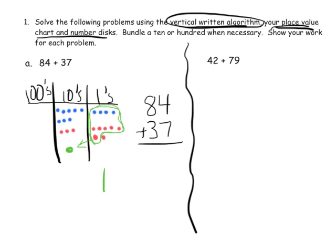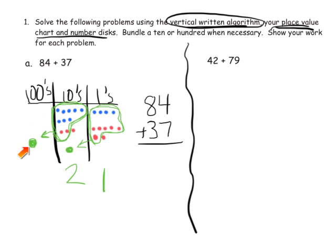Now what do we have in the 10s column? We had 8 up here plus 3 down here plus an extra 1 here — that's 12 tens. We can cash in 10 of those tens for an extra dot in the 100s column, leaving us with 2 in the 10s column left over. So we have 1 in the 1s column, 2 in the 10s column, and 1 in the 100s column. Our answer is 121.